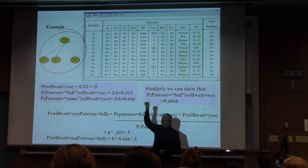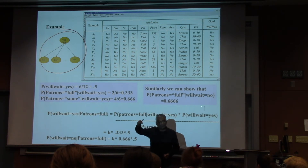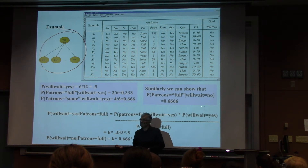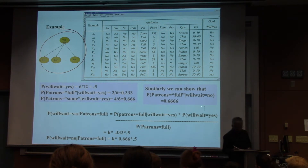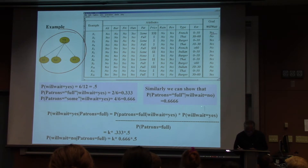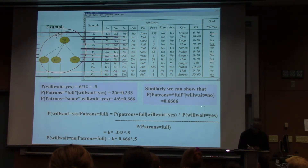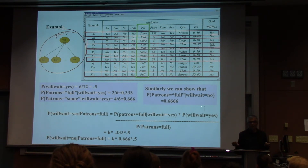For the first variable, we need to give the probability that it takes each value given its parents. Since it has no parents, it's just the prior probability of will-wait being yes or no. What would MLE say? Look at will-wait — how many times total? Twelve. How many times is it yes? One, two, three, four, five, six. So the MLE prior probability is six by twelve, which is 0.5.